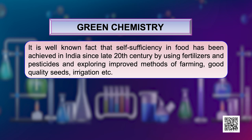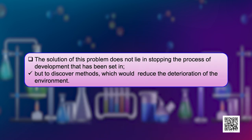It is a well-known fact that self-sufficiency in food has been achieved in India since the late 20th century by using fertilizers and pesticides and exploring improved methods of farming, good quality seeds and irrigation, etcetera. But over-exploitation of soil and excessive use of fertilizers and pesticides have resulted in the deterioration of soil, water and air. The solution does not lie in stopping the process of development, but in discovering newer methods which would reduce the deterioration of the environment. Green chemistry is a way of thinking and is about utilizing the existing knowledge and the principles of chemistry and other sciences to reduce the adverse impact on the environment.